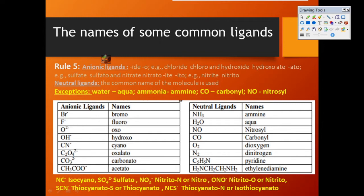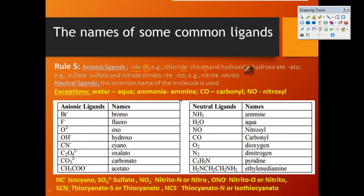There are three cases in naming anionic ligands. The first case: if the anionic ligand ends with '-ide', the last three letters '-ide' should be replaced with '-o'. For example, chloride ends with '-ide', so it becomes 'chloro'. Another example: hydroxide also ends with '-ide', so it becomes 'hydroxo'.